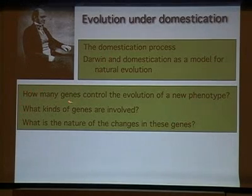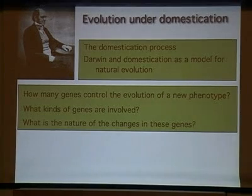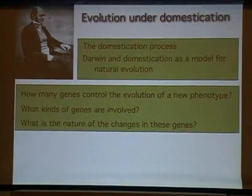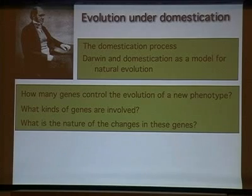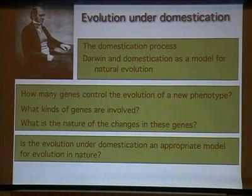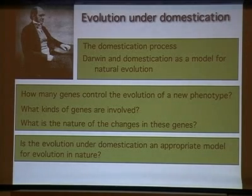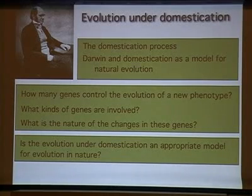The central part of my talk will address three questions about the genetic basis of domestication: how many genes does it take to control the evolution of a new phenotype — I'll focus on morphological phenotypes; what kinds of genes are involved; and what are the nature of the changes in those genes. At the end I'll come back to Darwin's model and ask whether what we see in domestication is similar to what we've learned from the evolution of natural plant species.